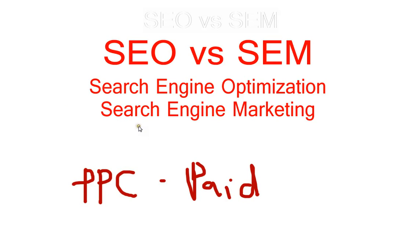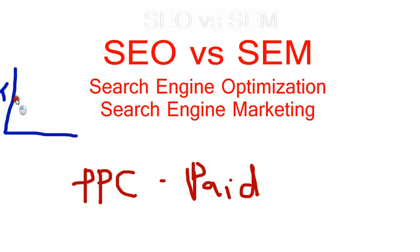The other difference between pay-per-click and SEO is — if you imagine a graph — with pay-per-click you're able to achieve traffic right away. Depending on your budget, you're able to get that traffic going instantly to your website. Whereas with SEO, it's going to be a slow build; you're not going to have that traffic right off the bat.